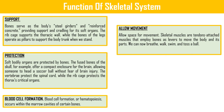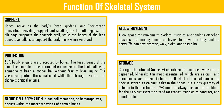Storage: the internal marrow chambers of bones are where fat is deposited. Minerals, the most essential of which are calcium and phosphorus, are stored in bone itself. Most of the calcium in the body is stored as calcium salt in the bones, but a tiny quantity of calcium ions must always be present in blood for the nervous system to send messages, muscles to contract, and blood to clot.